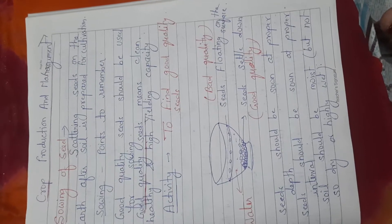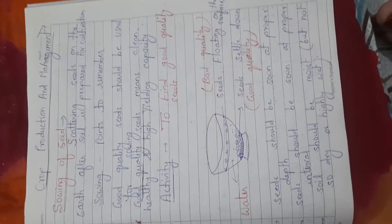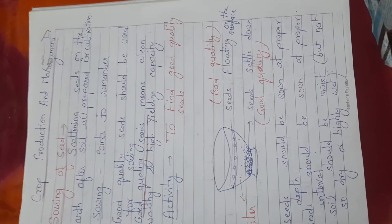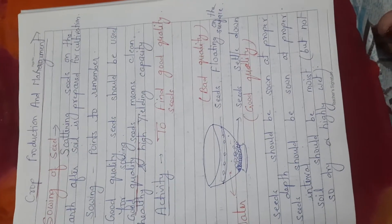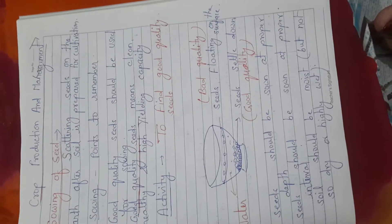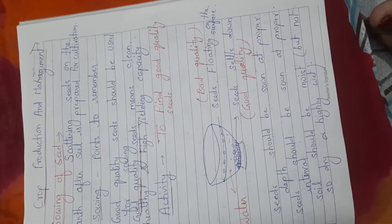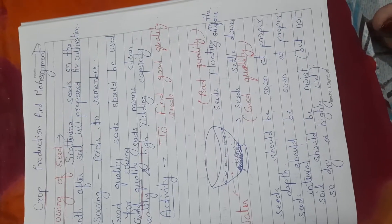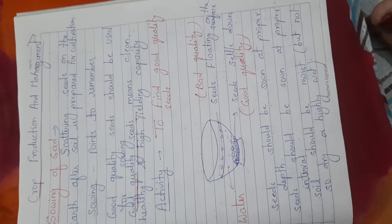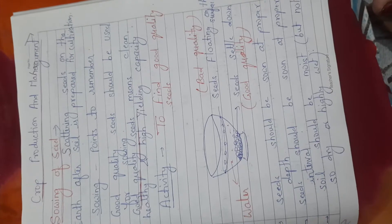After some time, what you will observe is that some seeds will settle down. The seeds that settle down means they are good quality seeds — they have higher density. And the seeds which float on the water surface, those are of bad quality, because they may be hollow or eaten by microorganisms, and that's why they have lesser density and float on the surface.